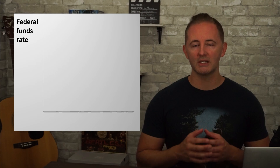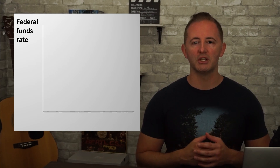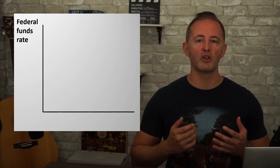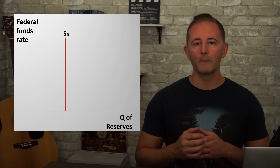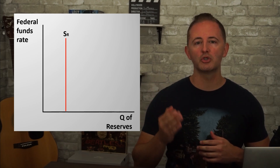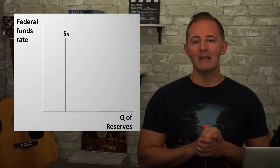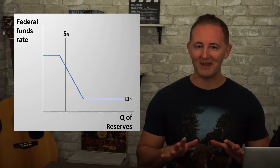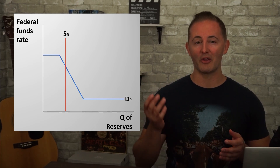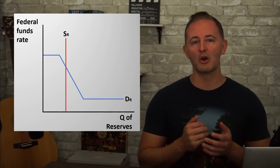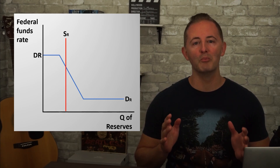Let's take a look at a model of the reserve market, because what happens on this market directly impacts what happens on the money market model. The y-axis is the federal funds rate — what the Fed is targeting when they make open market operations. The x-axis is the quantity of reserves. We have a vertical supply curve labeled SR, since the central bank has direct control over the quantity of reserves in the banking system at any given time. Now here comes the demand curve — we'll label it DR for the demand for reserves — and we immediately notice that there are three distinct sections of this demand curve.